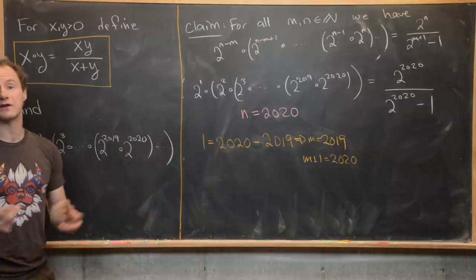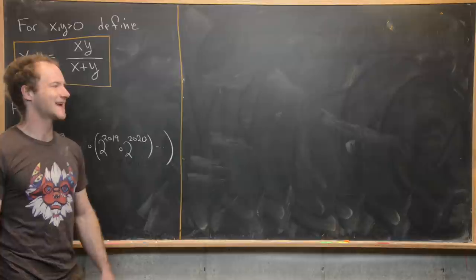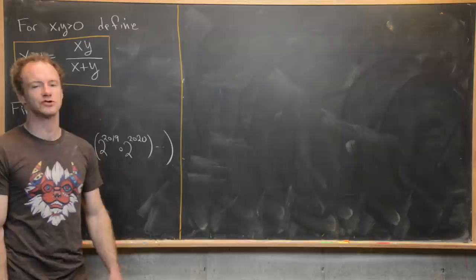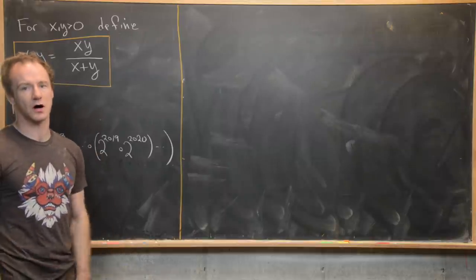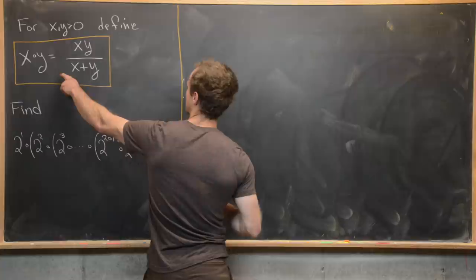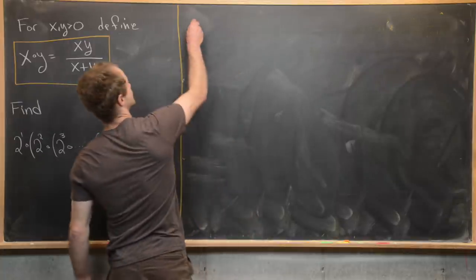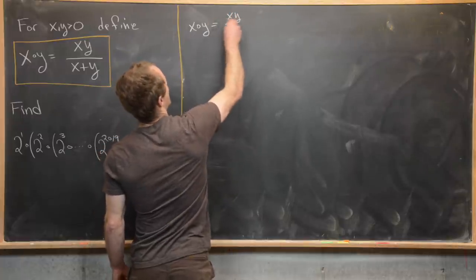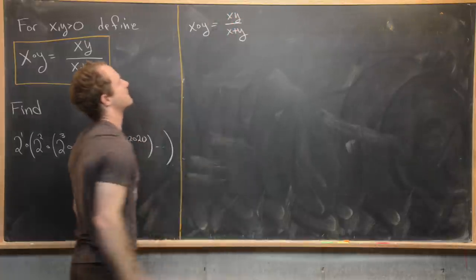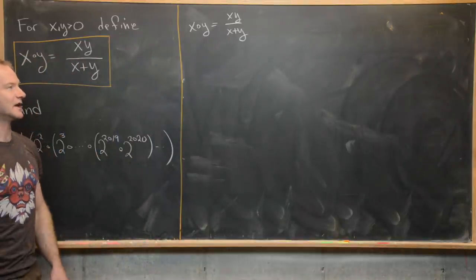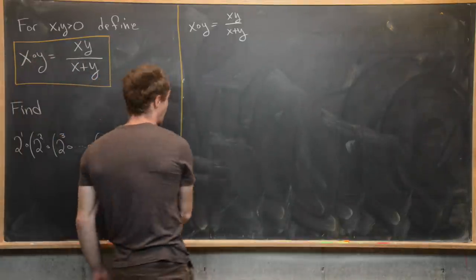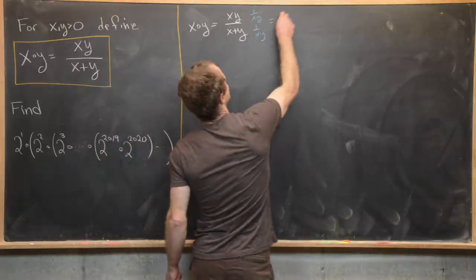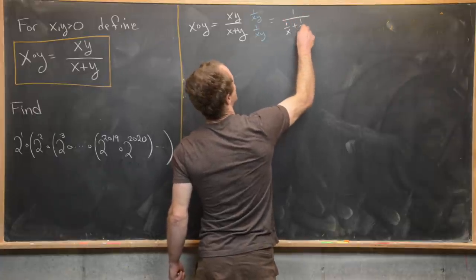For our second solution, I'll sketch the approach without full details. We look for a different form of the operation. For x circle y equals xy over x plus y, if we multiply numerator and denominator by 1 over xy, we get 1 over 1 over x plus 1 over y. That's a nice-looking alternative formula.